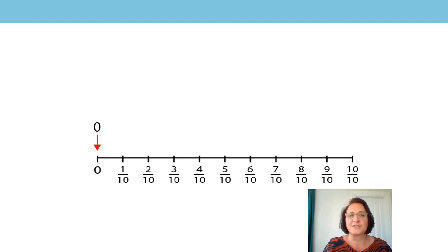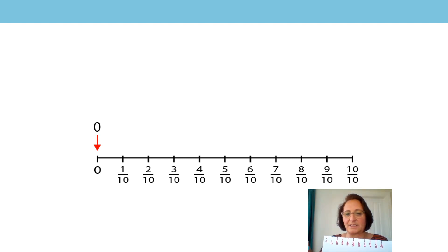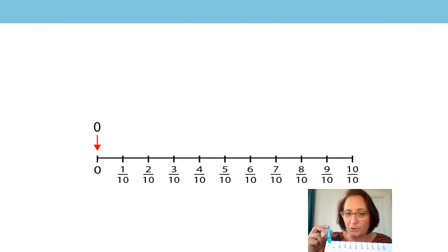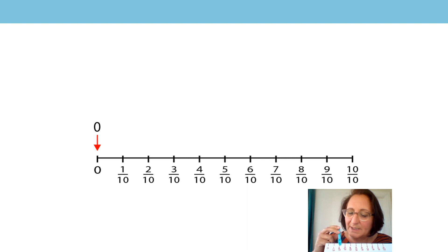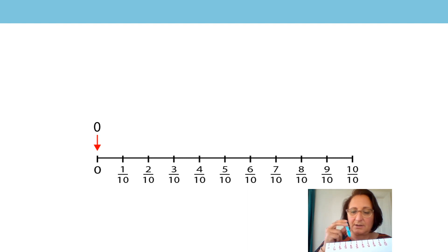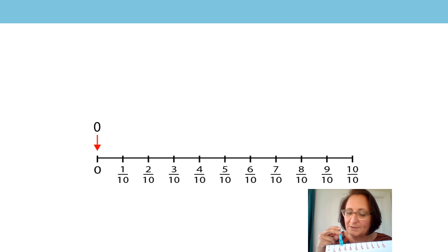If we thought about the number line as a whole, starting at zero and ending at ten tenths or one whole, where would four tenths be? I'm going to use a peg and count along the number line. Starting at zero: one one-tenth, two one-tenths, three one-tenths, four one-tenths. Can you do that with me? Zero, one one-tenth, two one-tenths, three one-tenths, four one-tenths.